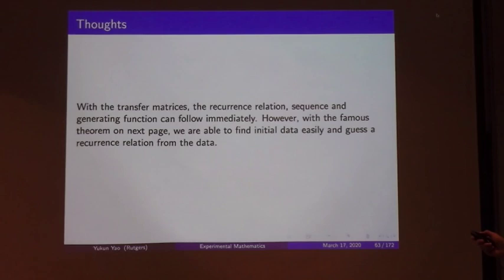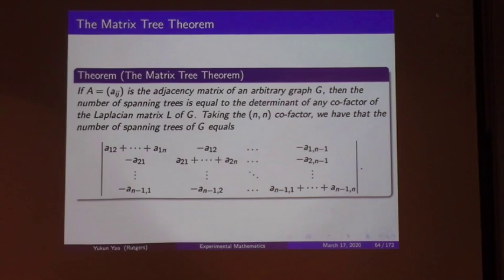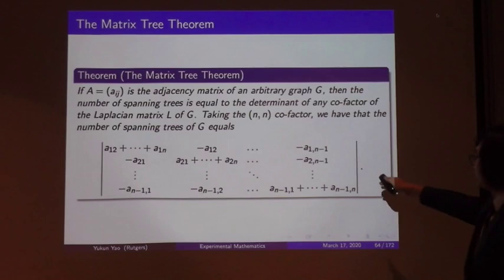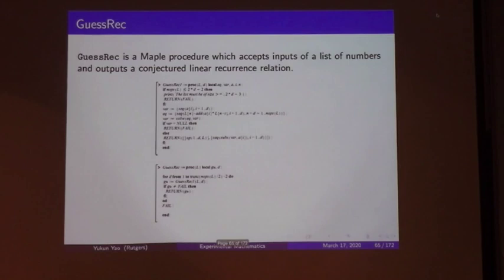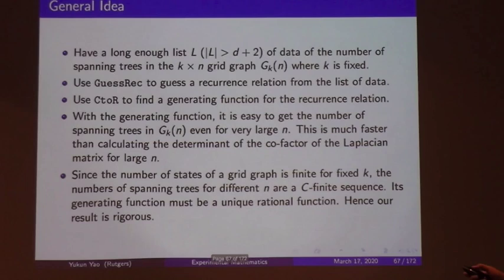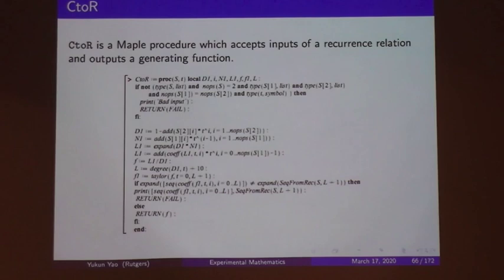With the transfer matrix framework, we can do substantial computation, but our experimental mathematics framework is easier: we gather numerical data and infer a recurrence relation from the data. We have MAPLE procedures: GSREC extracts a conjectured linear recurrence from a list of numbers, and C2R accepts a recurrence and outputs a generating function. A committee member asked why we didn't use the standard MAPLE package GFUN instead.